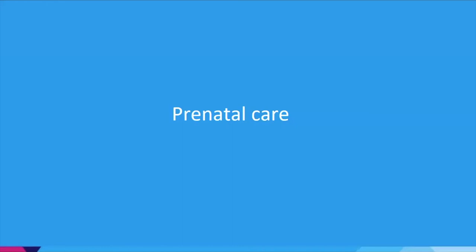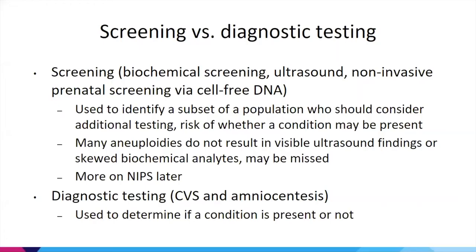Now thinking about the transfer of these embryos and prenatal care: first a brief review of genetic testing options in pregnancy. We have screening and diagnostic testing. Screening involves biochemical maternal serum tests, ultrasounds, and non-invasive prenatal screening using cell-free DNA. Screening identifies a subset of the population who may need additional testing — it gives a risk estimate rather than a diagnosis. Many aneuploidies don't produce visible ultrasound findings or skew biochemical analytes, so mosaicism could be missed with screening alone.